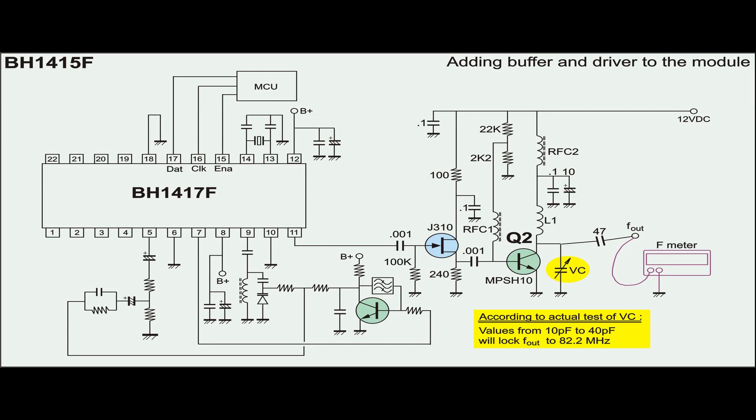Anything larger than 40 pF or less than 10 pF will cause Q2 to swing out of stability. And all kinds of frequencies will be outputted in random.